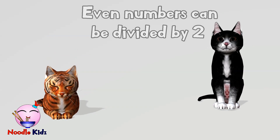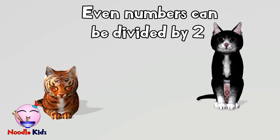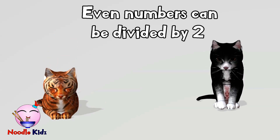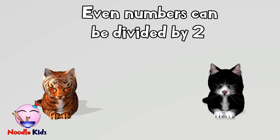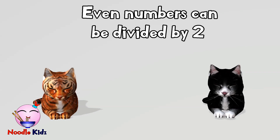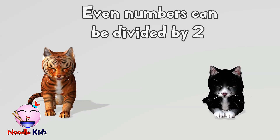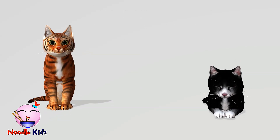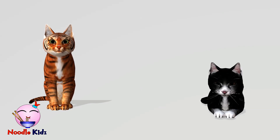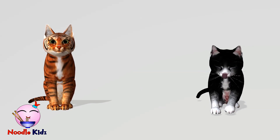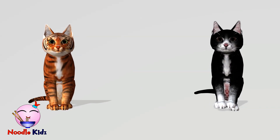If the number cannot be divided by two, it means that number is an odd number. There is, however, an easier way to tell if a number is an even number or an odd number.